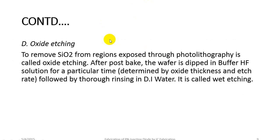The fourth process is oxide etching. To remove silicon dioxide from the region exposed through photolithography is called oxide etching. After the photoresist step, the wafer is dipped in a buffered HF solution for a time determined by the oxide thickness, followed by thorough rinsing in deionized water. This is called wet etching.